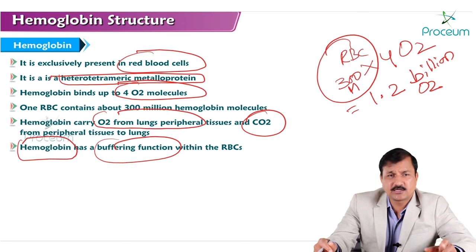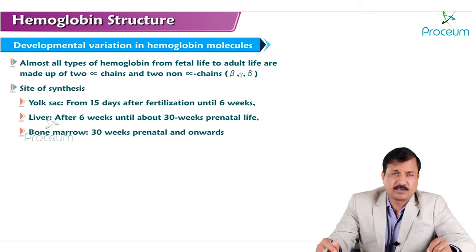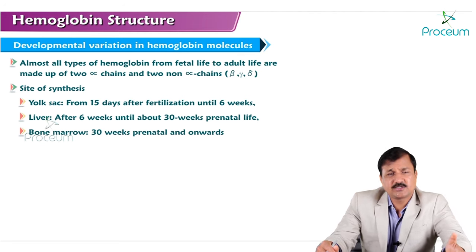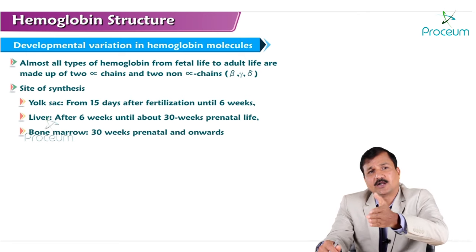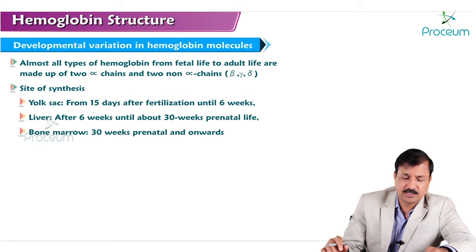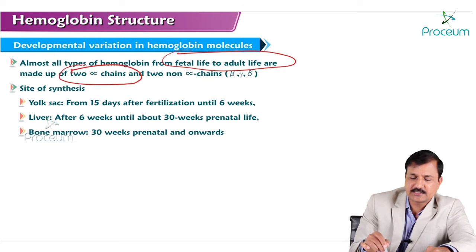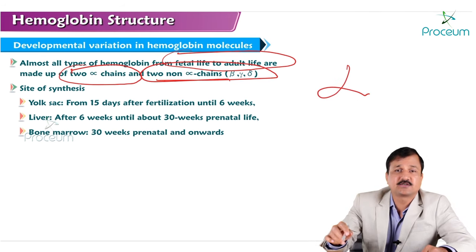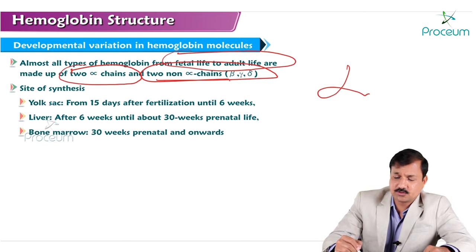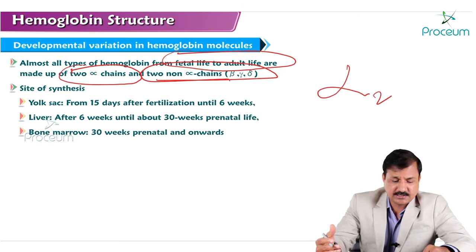The buffering function of hemoglobin largely comes from the presence of histidine within it. Coming to developmental variation: almost all types of hemoglobin from fetal life to adult life are made up of two alpha chains and two non-alpha chains. The alpha chain is fundamental from fetal life onwards. Along with the two alpha chains, there are two other non-alpha chains, which can be beta, gamma, or delta chains.